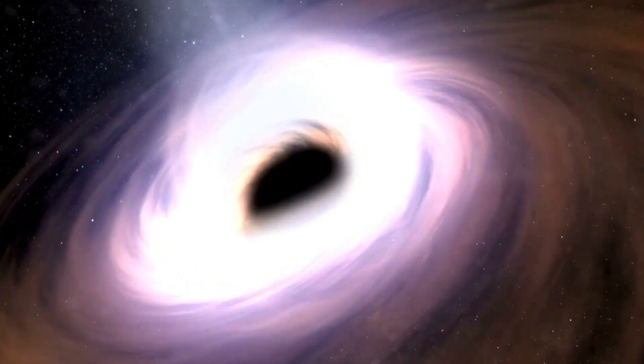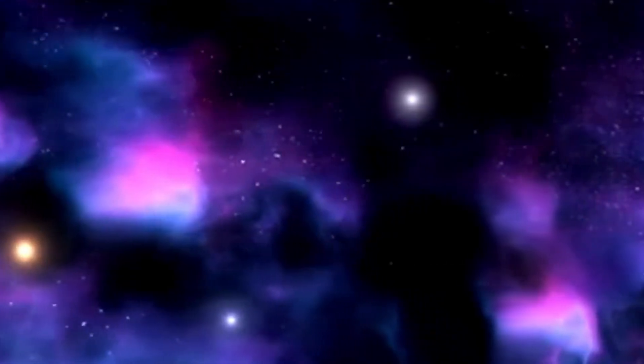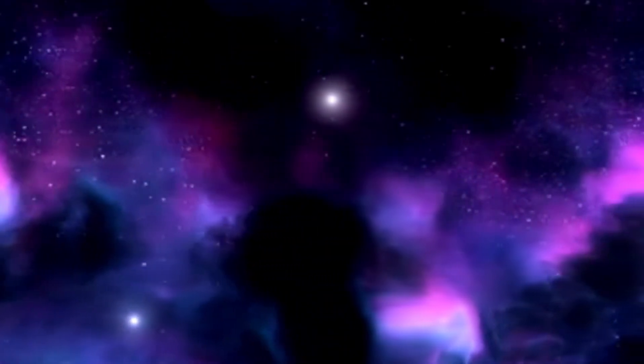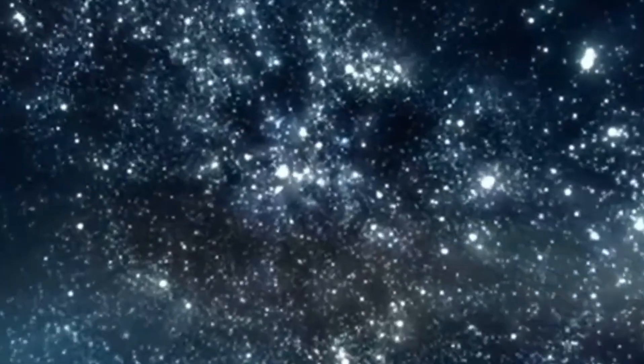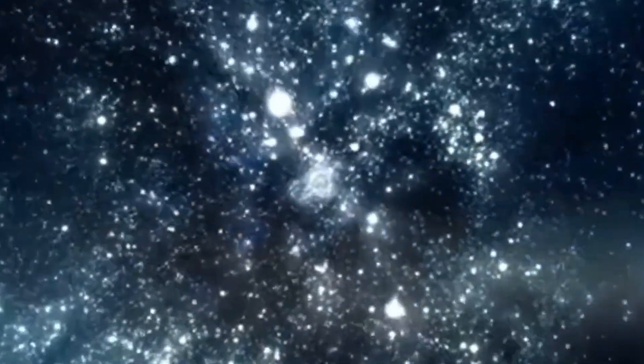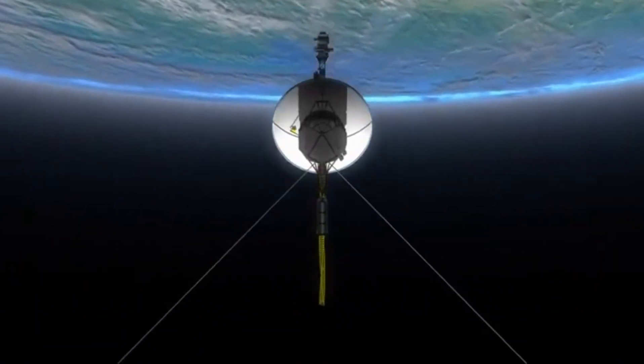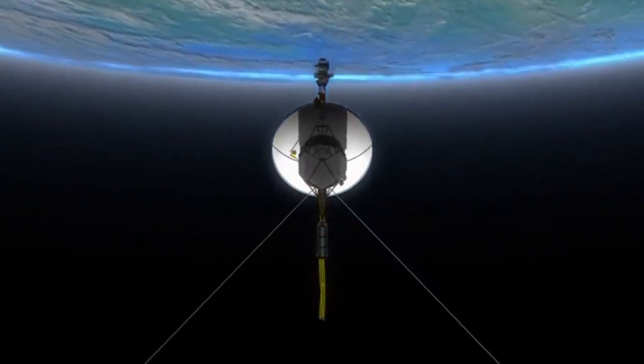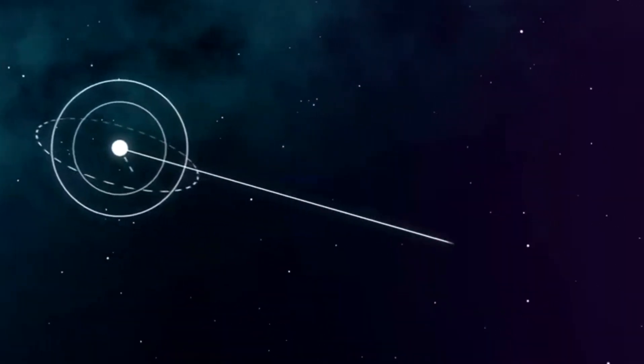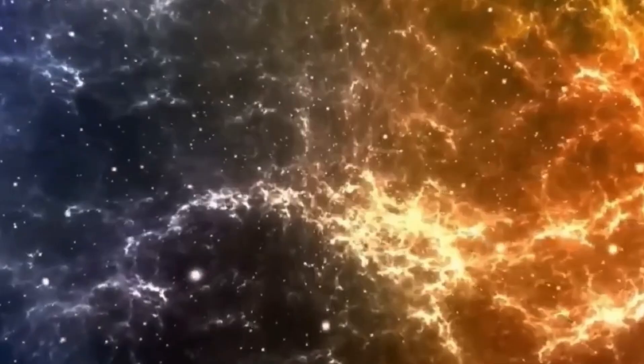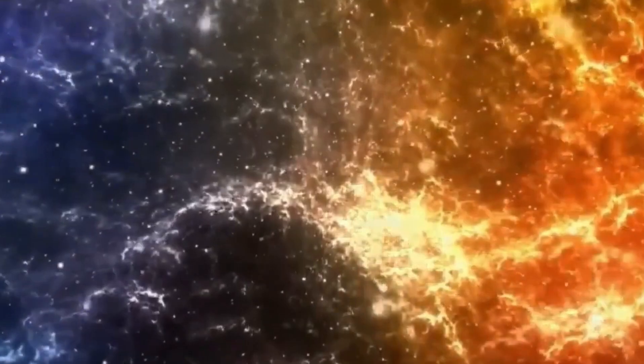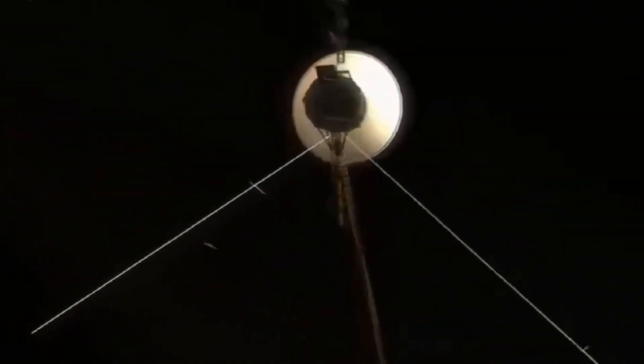This is where gravity assists come into play. It's a bit like cosmic choreography. Instead of relying solely on their engines, these spacecraft performed a celestial dance with some of our solar system's heavyweight planets, using the immense gravitational pull of these giants to slingshot themselves on their way. This clever maneuver allowed them to conserve precious fuel and gain the velocity they needed to visit multiple destinations on their grand tour.